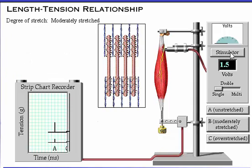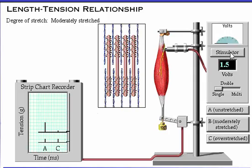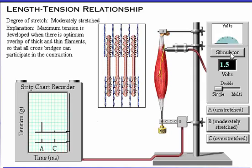At position B, maximum tension is developed when there is optimum overlap of thick and thin filaments, as in this moderately stretched muscle, so that all cross-bridges can participate in the contraction.